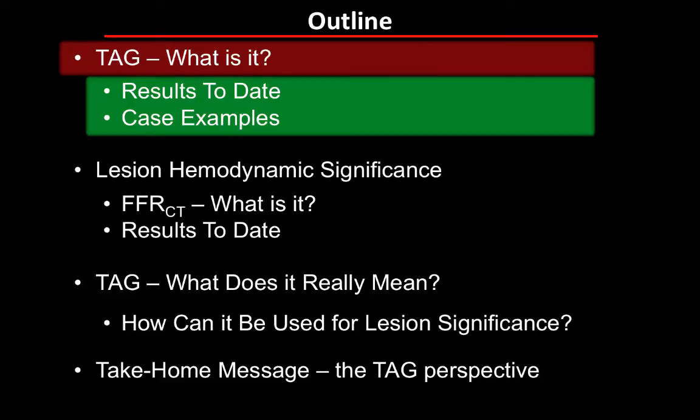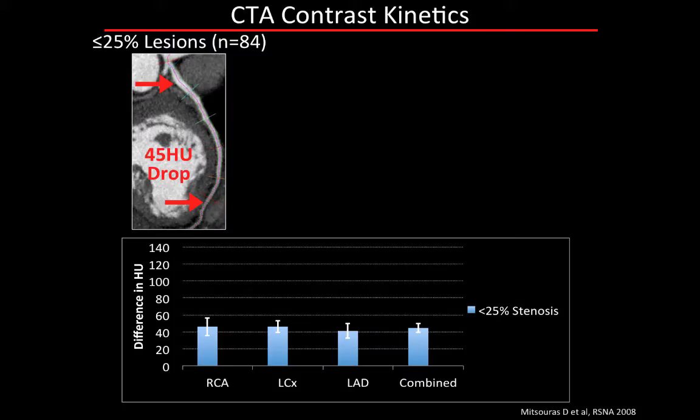So let's start with what is the TAG, some results to date, and some case examples. The TAG emerged from the observation that when we got the first 320-detector CT, we expected a coronary artery—imaged in its entirety in a single moment in time—to have the same opacification throughout its length. However, what we found is that even in normal arteries, there was a small drop-off in enhancement from proximally to distally, about 45 Hounsfield units, the same among all the main coronary arteries.